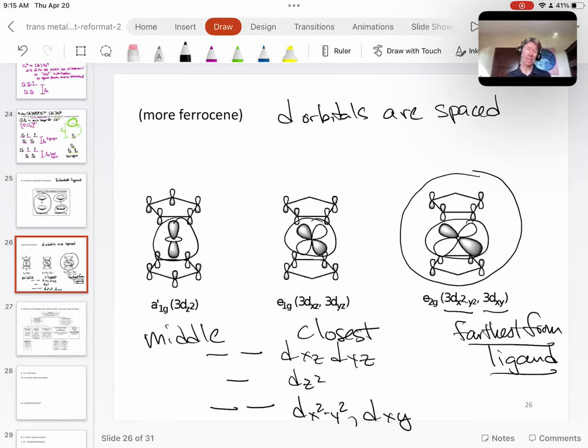Those are going to be the highest energy because they are closest to the ligands, and so we can come up with our own orbital layout based on new geometries, which is pretty cool.